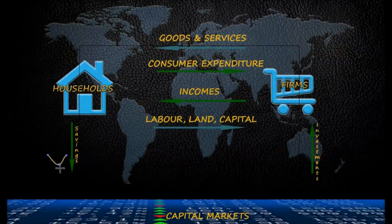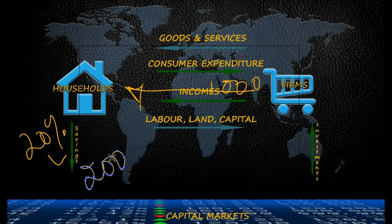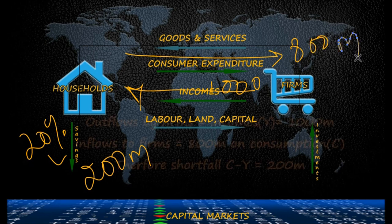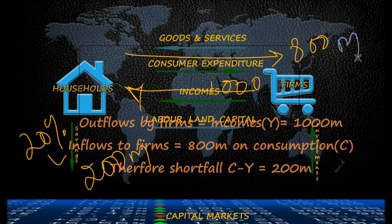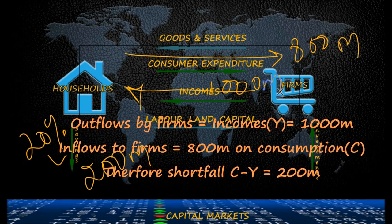In our slightly more realistic world, households now start saving a part of their income. This means that only a part of the income they receive goes into consumer expenditure. Firms therefore receive less of this monetary flow from consumer expenditure, while they shell out more in the form of income. As a result, firms fall short of money since consumer expenditure minus income is now negative.